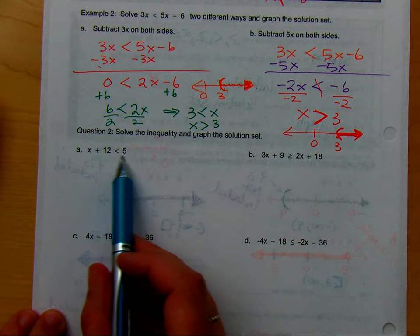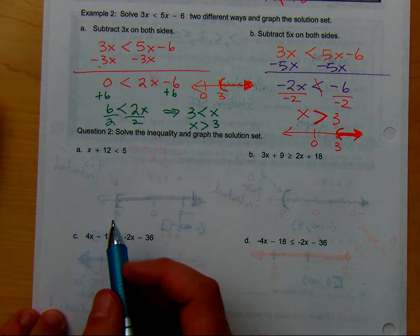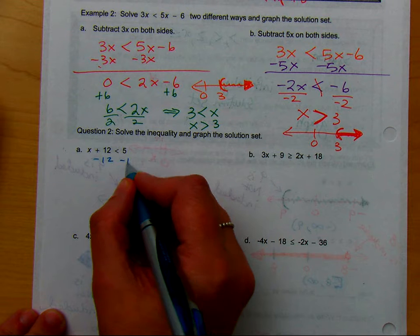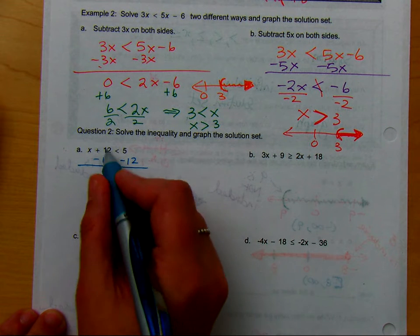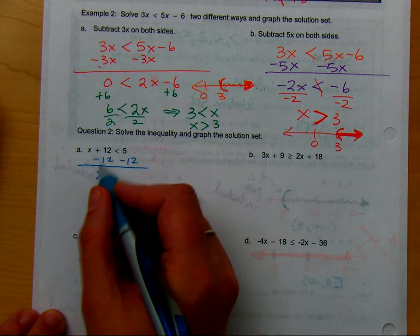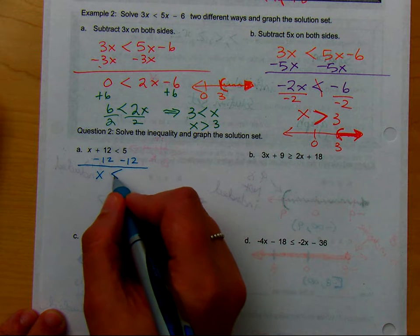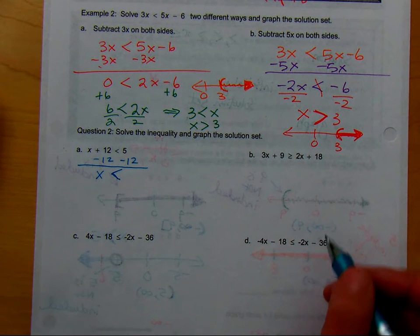So, what would we do to solve this inequality? Subtract 12 from both sides, and why subtract 12? Exactly, isolates the x, cancels out the 12, and we're going to keep that inequality. Should I flip the inequality, or should I leave it the way it is?